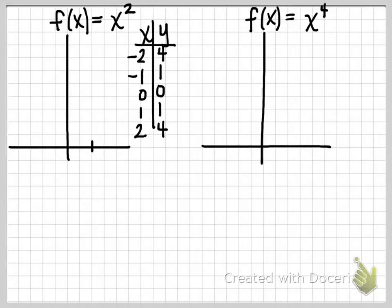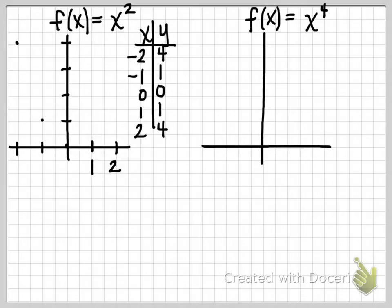I'm going to space out my tick marks on my grid, going every other tick mark, because that's just going to let me compare these two graphs a little more closely. So negative 2, 4; negative 1, 1; 0, 0; 1, 1; and 2, 4 are those common points on the parabola.